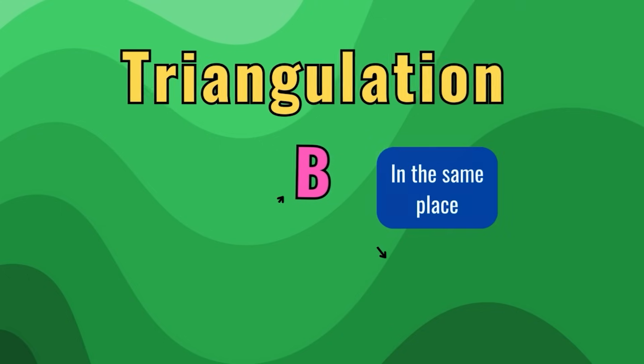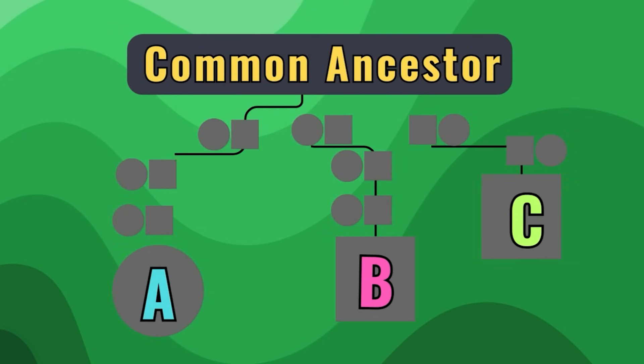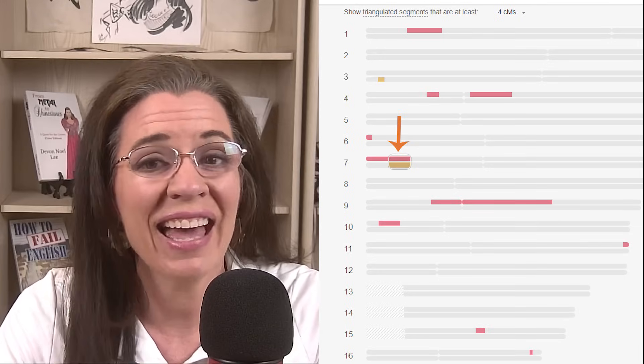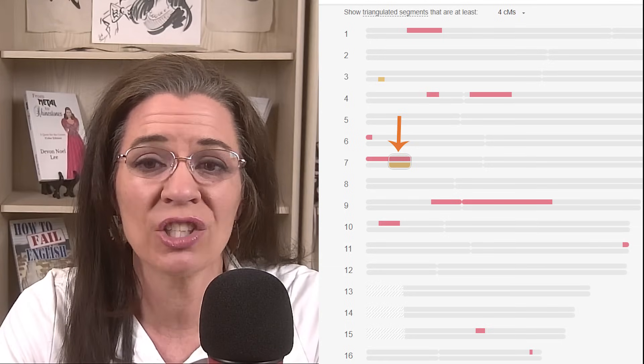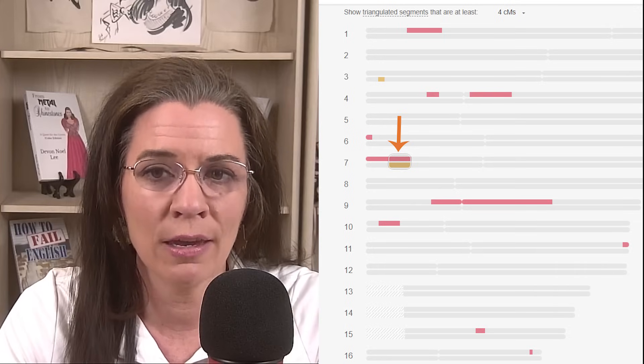Let's turn our attention to defining what triangulation is and why people obsess over it. Triangulation is when you, Match A, and Match B all share the same segment of DNA on the same chromosome. That means you likely inherited that segment from the same ancestor. MyHeritage makes it easy by showing a little icon next to your shared matches that triangulate.